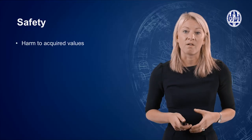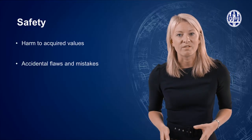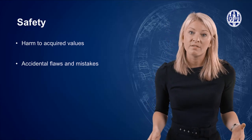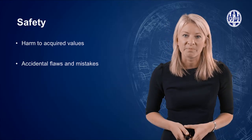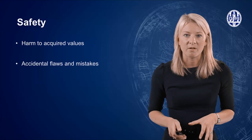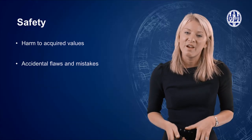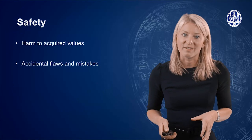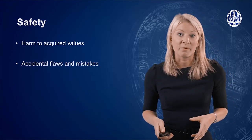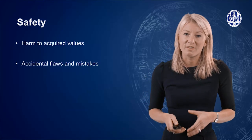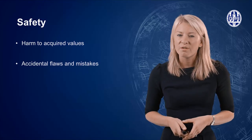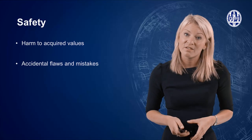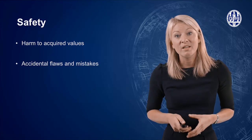Let's start with safety. The concept of safety is most often used to describe situations when acquired values are harmed by accidental flaws and mistakes. These can be technical errors, organizational failures, or forces of nature. A simple example of a safety issue is enjoying a walk on a summer night and getting hit by lightning. This example demonstrates that safety is about protection from accidental harm — no human is causing you trouble, but the accident seriously harms your health and may even take your life.